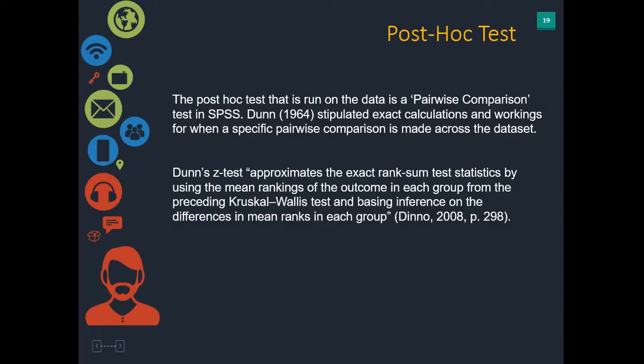In order to find where that difference lies, we need to run a post hoc test. Luckily, SPSS automatically runs a post hoc test for you — this is called a pairwise comparison and it uses the Dunn test. Dunn in 1964 stipulated an exact calculation for when a specific pairwise comparison is made across a dataset. The Dunn test approximates the exact rank sum test statistics using the mean rankings of each group from the preceding Kruskal-Wallis test, basing inference on the difference in mean ranks within those groups. SPSS will do that for you.